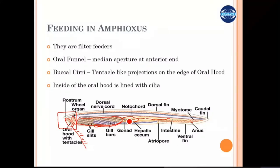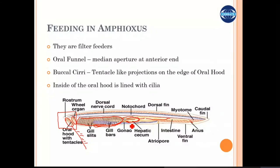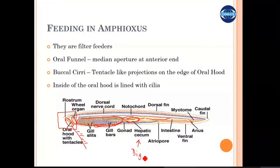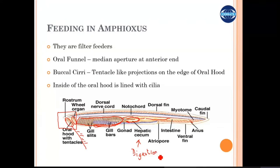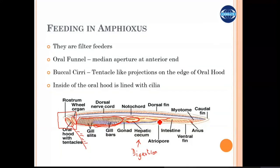The mucus released by the endostyle covers the whole surface of the pharyngeal basket, attaches to the food material, and then passes all the collected food towards the intestine. From the intestine it goes into the blind cecum — the hepatic cecum — where digestion happens by the release of digestive enzymes. The undigested food then moves along the intestine and leaves the body through the anus.